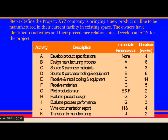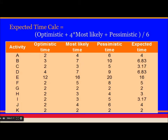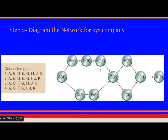Using this table, I constructed this network diagram. A takes 4 weeks, and B can only start when A has finished. Similarly, C can only start if A has finished. Based on this, these are the connected paths, and after calculating the total number of weeks each path takes, whichever path has the highest number of weeks becomes the critical path for this project.